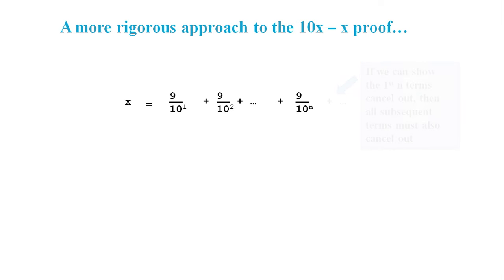And so we start with x equals our series up to the nth term. On the line above we write 10x equals 10 times a series up to the nth term. Next we do the subtraction just like in the informal proof. Here a lot of the middle terms cancel out.